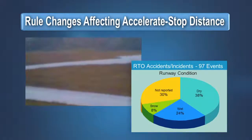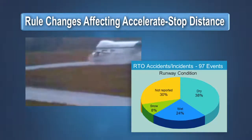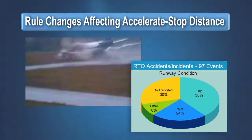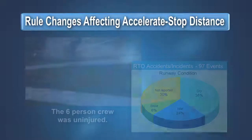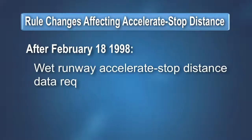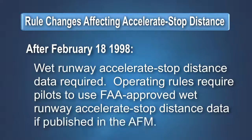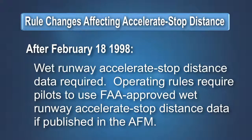In response to the disproportionate number of rejected takeoff accidents on wet runways, the certification rules were again amended in 1998. Manufacturers are now required to provide wet runway accelerate stop distance and wet runway takeoff distance data in the airplane flight manual for all newly type-certificated transport airplanes, and the operating limitations and rules require the use of this data when the runway is wet.